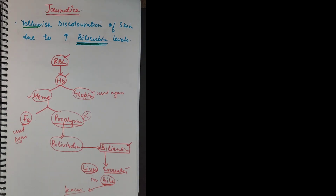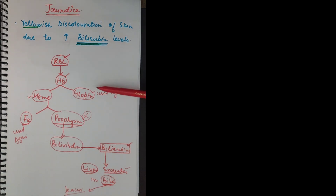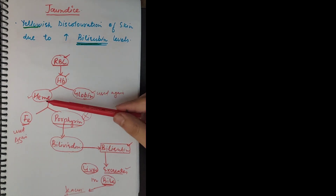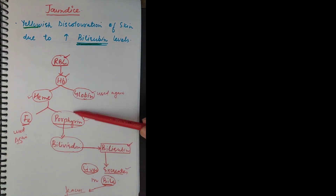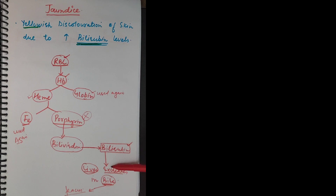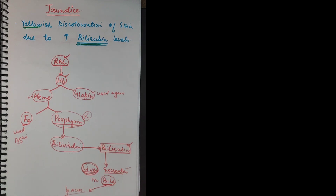Since jaundice is related to bilirubin, this fundamental diagram is very important. In basic terms: RBCs are destroyed, hemoglobin is released, hemoglobin breaks into globin (used again) and heme. Heme breaks into iron (used again) and porphyrin, which is converted to biliverdin, then to bilirubin. This bilirubin is taken to the liver. The liver converts bilirubin into a more soluble form, which is excreted in the bile and comes out of the body.